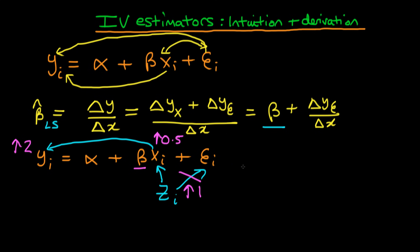Well, the answer is that the instrumental variables estimator for beta in this circumstance would be the change in y, which in this case is 2, divided by the change in x, which is 0.5. So that would be 2 divided by 0.5, which is 4. So the instrumental variables estimate for beta would be 4.